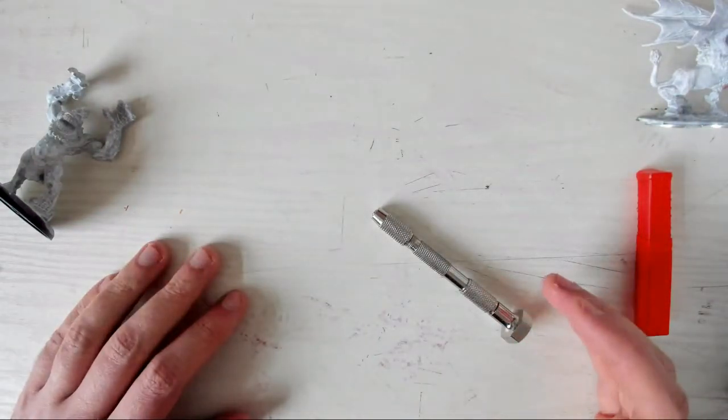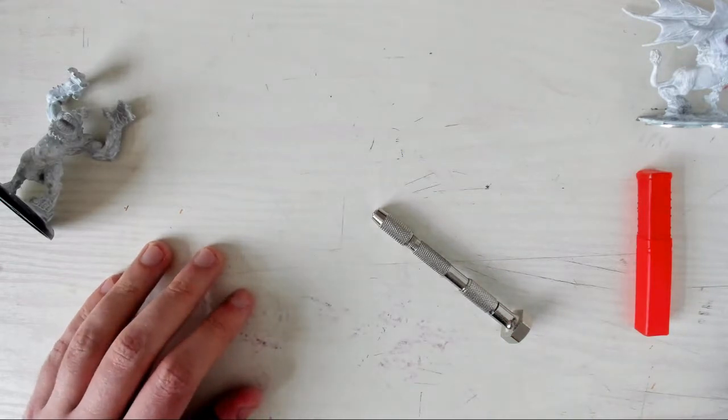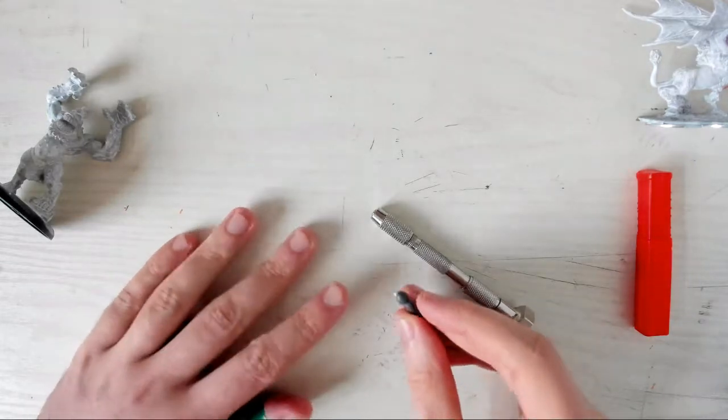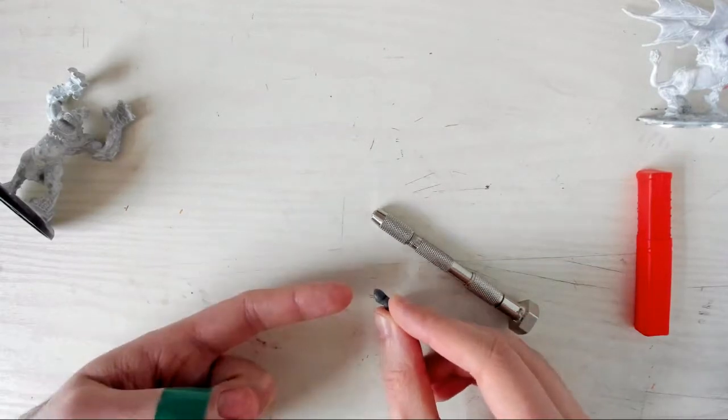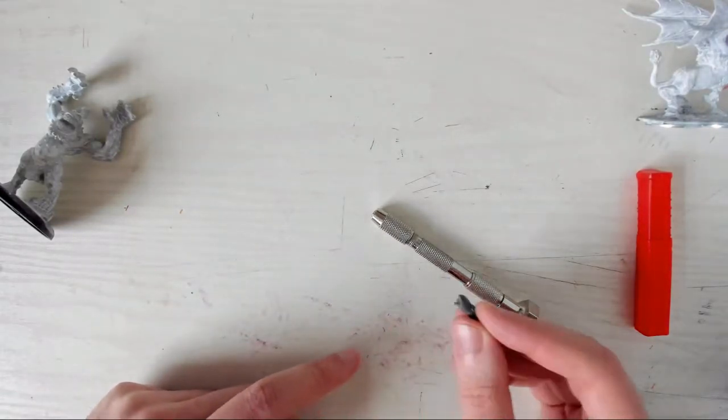Pinning is also a really helpful technique for repairing broken minis or for doing conversions, where you want to take parts from different kits and smush them all together to make something unique. The basic idea is to stick a pin or peg between the parts you want to connect together to reinforce the join and increase the surface area the glue can act on, which will help hold everything together.